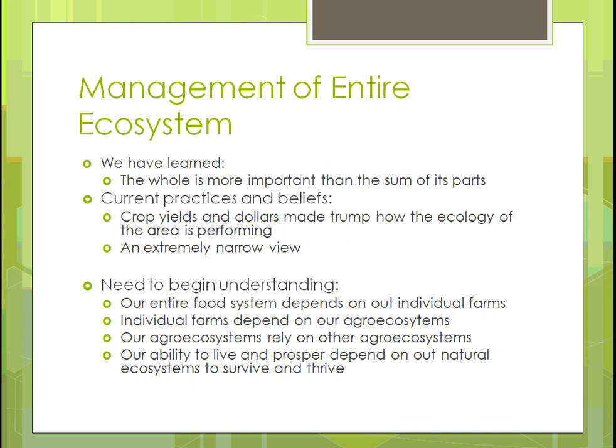Our food system certainly depends on all the individual farms out there. Individual farms depend on our agroecosystems — the natural area we're in affects what happens, and what we do on our farm affects that in turn. Agroecosystems rely on other agroecosystems, so that region we're talking about has to work together to form one agroecosystem. The ability to live and prosper depends on natural ecosystems surviving and thriving.